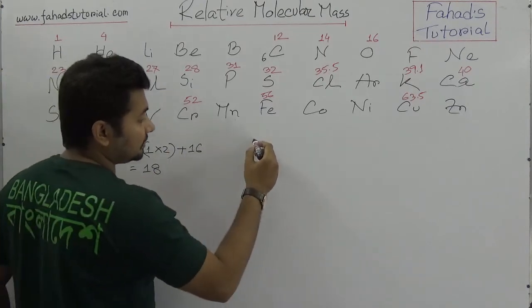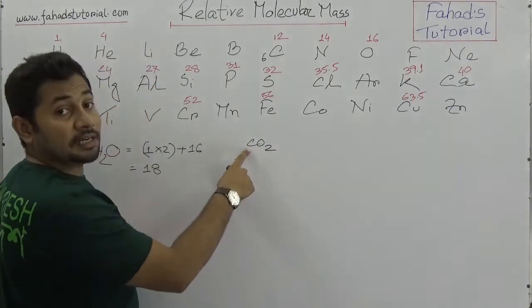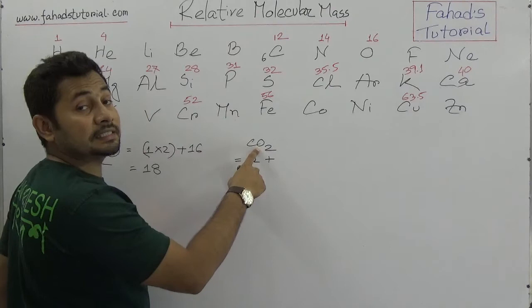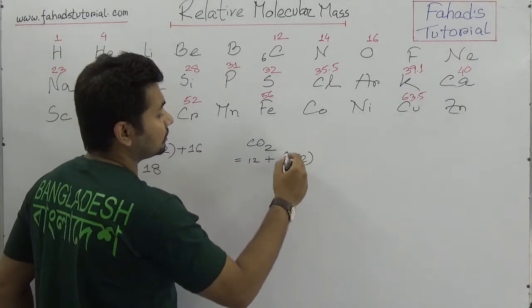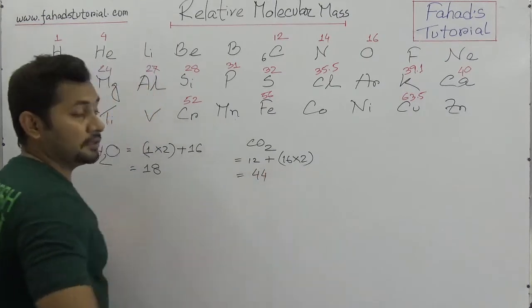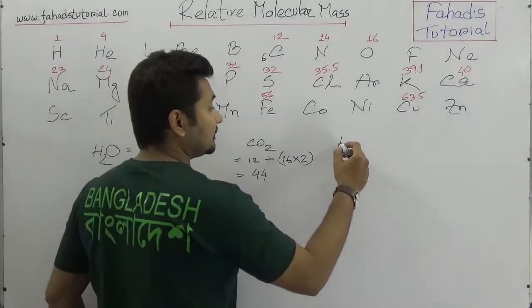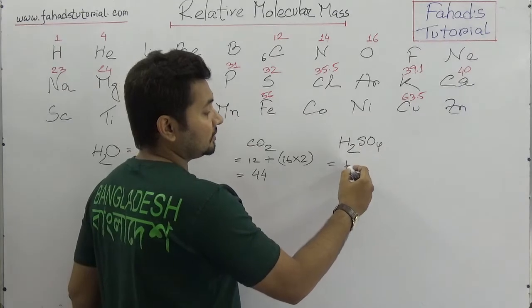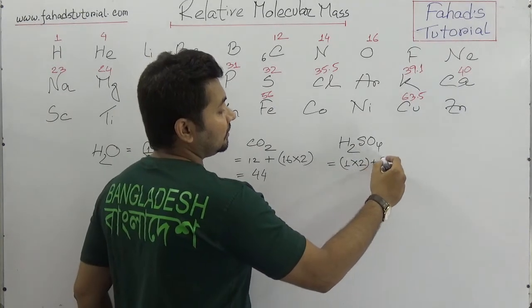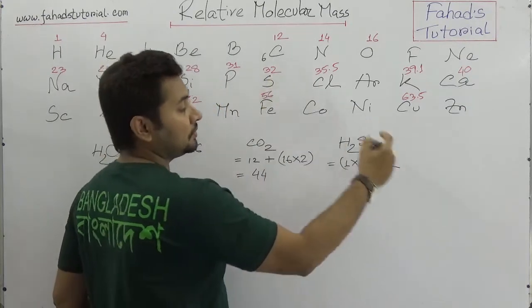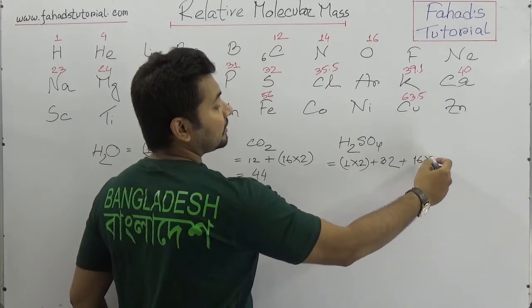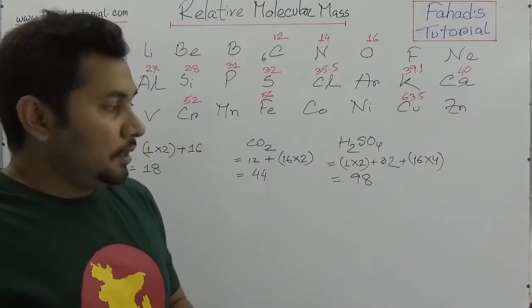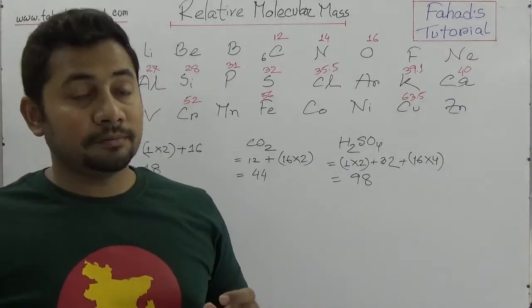For carbon dioxide, carbon has an atomic mass of 12 and there are two oxygen atoms each with atomic mass 16, giving 12 plus 32 equals 44. For sulfuric acid H₂SO₄, hydrogen is 1 times 2, plus sulfur is 32, plus oxygen is 16 times 4. Adding these together gives a relative molecular mass of 98.